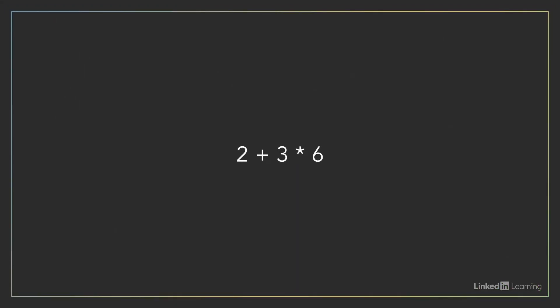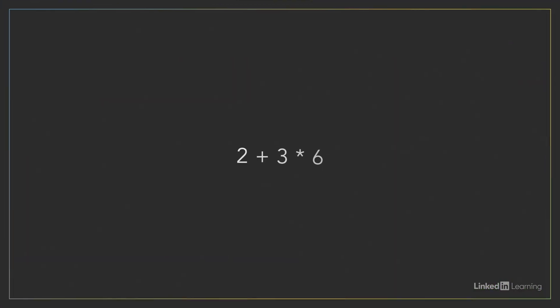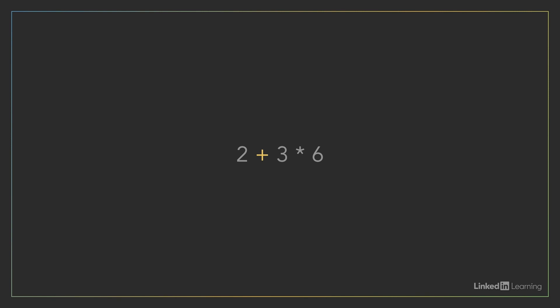Now let's look at another expression where the answer may surprise you: 2 plus 3 times 6. What do you think this expression evaluates to? It's 20. Now if you thought 30, that's understandable. But in programming, the default order of operations is the same as in mathematics. The addition operator in our example is evaluated after the multiplication operator. That's why we get 20 instead of 30.